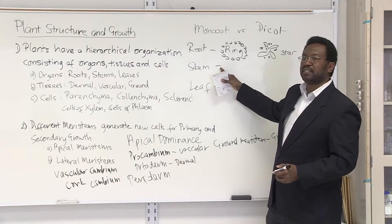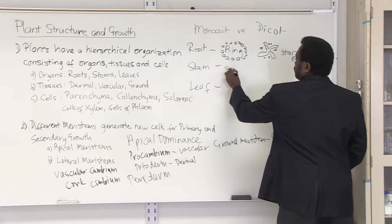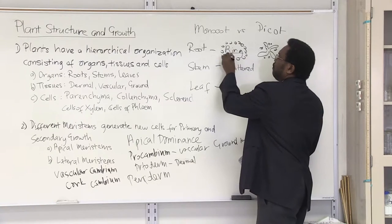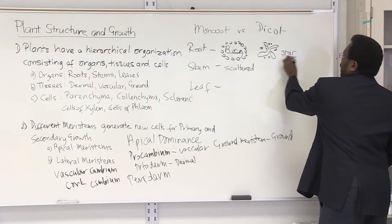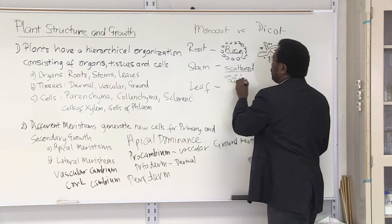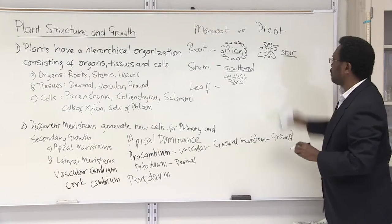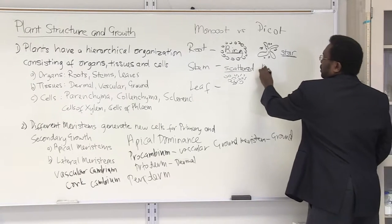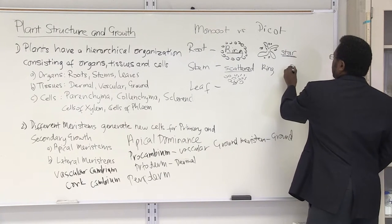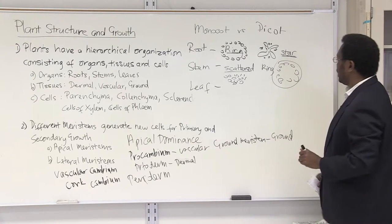As we look at the arrangement of the stem for the monocot, you have a scattered arrangement. The vascular tissue is scattered — so a ring arrangement in the root, a star for the dicot root, and a scattered arrangement for the monocot stem. Scattered means there's no organized pattern; it's just everywhere throughout the stem. Whereas in the dicot, you actually have an organized ring arrangement, but the ring is further to the outside of the stem.